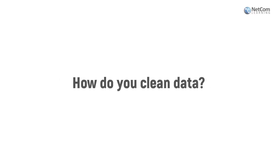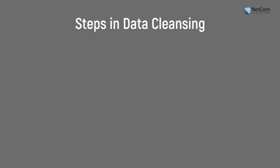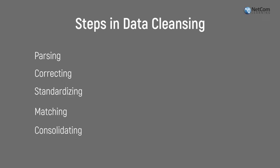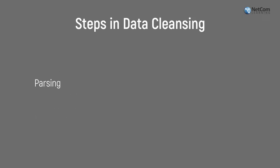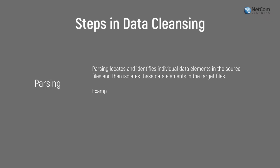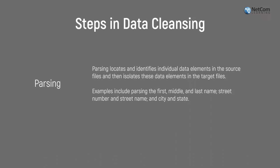How do you clean data? The steps in cleaning data are parsing, correcting, standardizing, matching, and consolidating. Parsing locates and identifies individual data elements in the source files, then isolates detailed elements of the target files. Examples include parsing the first, middle, and last name, street number, and so on.